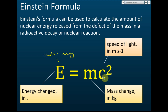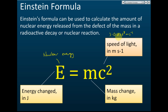You don't need to memorize the value of the speed of light because it will be given. The speed of light is 3.0 times 10 to the power of 8 meters per second. After you square it, that becomes 9.0 times 10 to the power of 16. That's how we calculate the nuclear energy from the mass defect.